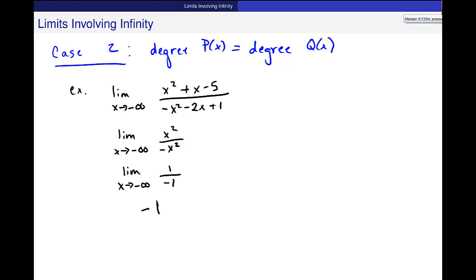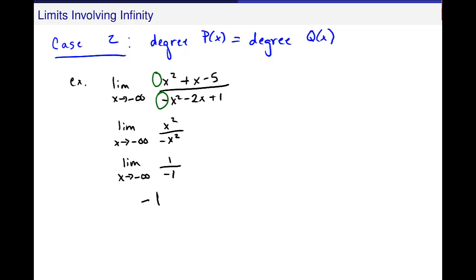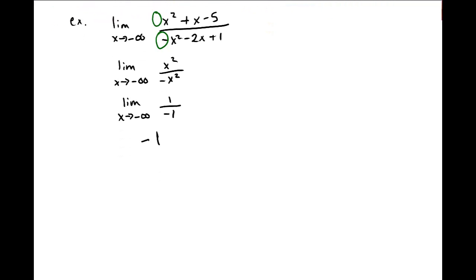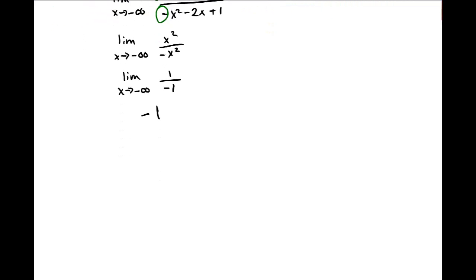Okay? In this case, we get a relationship between the limit and the coefficients here on the dominant term. So whatever the coefficients are in p(x) and q(x), these leading coefficients, then that should be the limit. So let me just try and write that down a little bit.